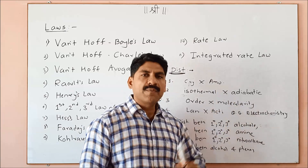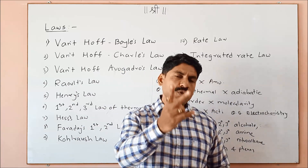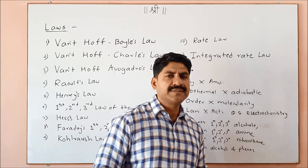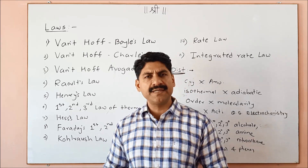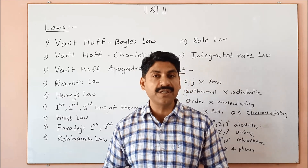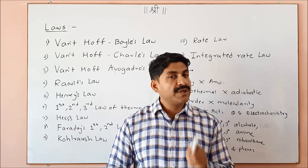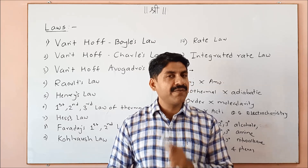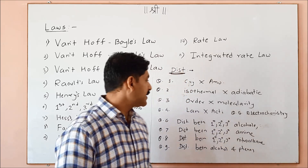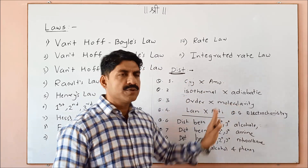Electrochemistry section: distinguish in electrochemistry. Electrolytic cell, electrolytic conductor, and electronic conductor — you have to distinguish these four parts in electrochemistry.